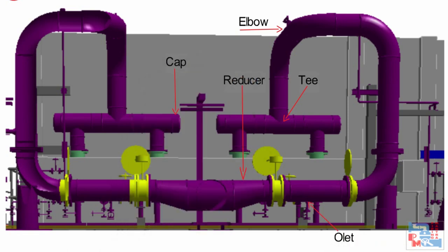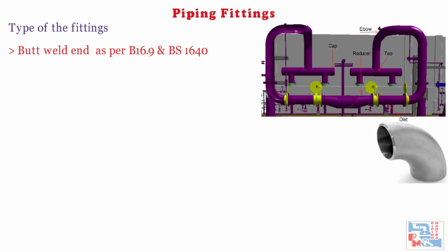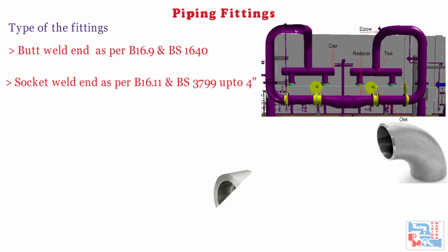In this video, we are going to briefly discuss about end connections. Butt weld end, as per ASME B16.9 and BS1640 — to connect this kind of fitting, the pipe should have a beveled end for welding. Socket weld end, as per ASME B16.11 and BS3799, are available up to 4-inch sizes only. To connect this kind of fitting, the pipe should have a plain end for welding.